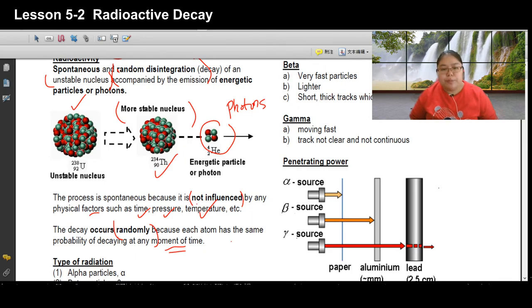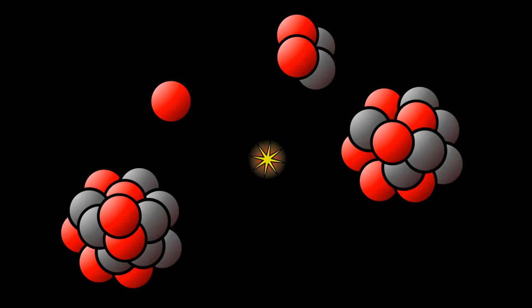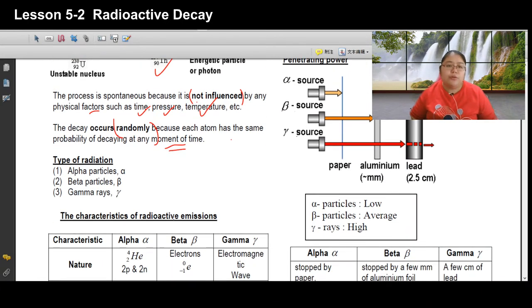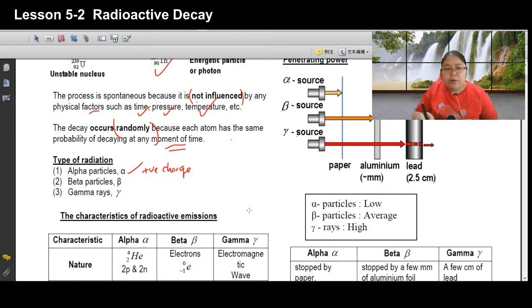Here is an example of decay: an unstable particle decays to produce a new stable particle and an energetic particle — a photon. Now, photons come in three types of radiation. First is alpha — which carries a positive charge. You can also call it a proton, but normally we just call it alpha.